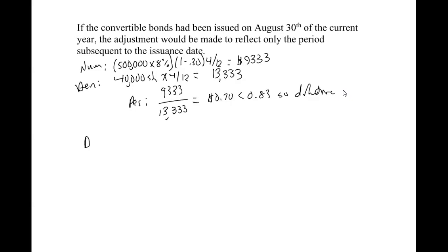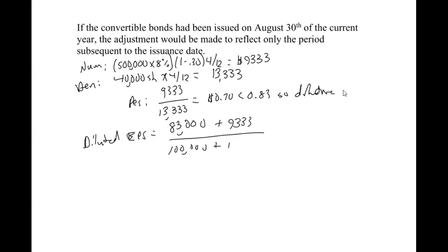Adding the numerator and denominator effects into basic EPS: $83,000 over 100,000 shares plus the bond adjustments still works out to $0.81 per share. The answer didn't change here, but with different numbers it potentially could. The key point is to always pay attention to your dates. You go back to the beginning of the year if the bonds were outstanding all year; if not, you can only go back to the point in time when they were issued.